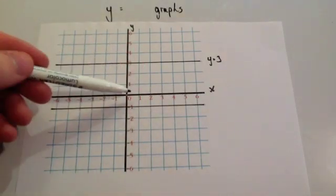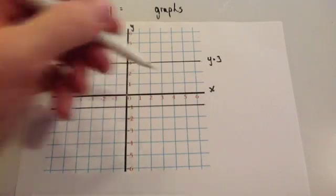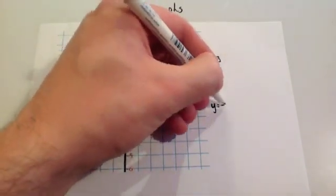This line here, all of them have got a height of minus 1, and they go through the y-axis at minus 1, so the equation would be y equals minus 1.